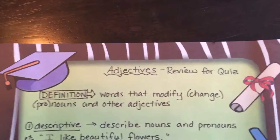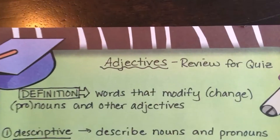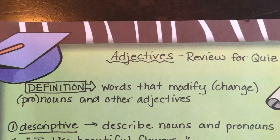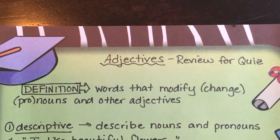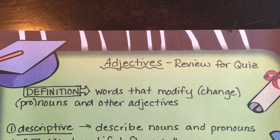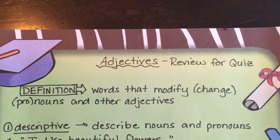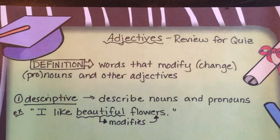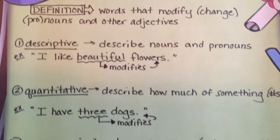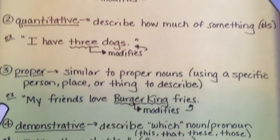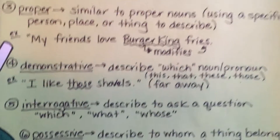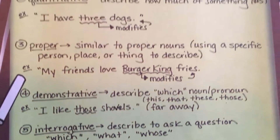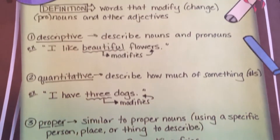Let's get into the basics. The definition for an adjective is it's a word that modifies or changes pronouns and other adjectives. We're going to go over the six kinds of adjectives right here, and these are all six adjectives that are going to be on the quiz.